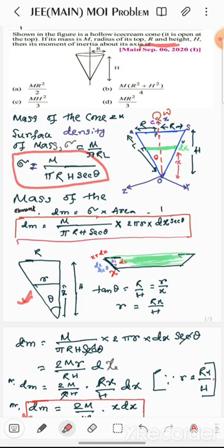Now let us consider a small element which should be a ring at the height x from the vertex O and dx be the radius and thickness of the element. Then the mass of the element dm will be sigma into area of the element.